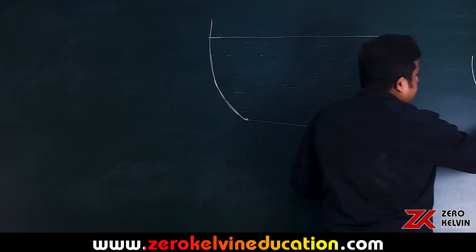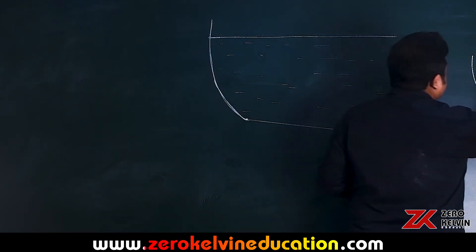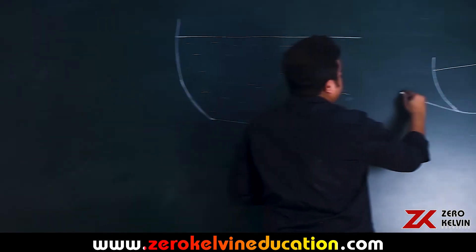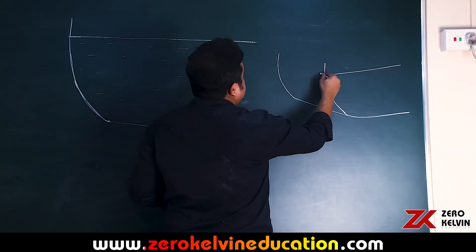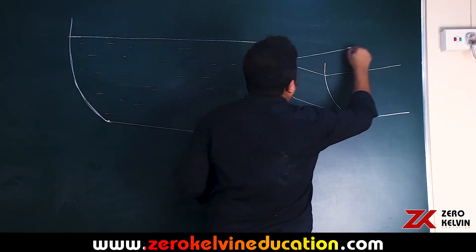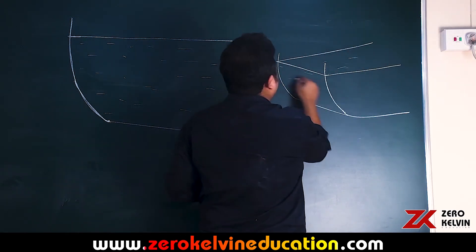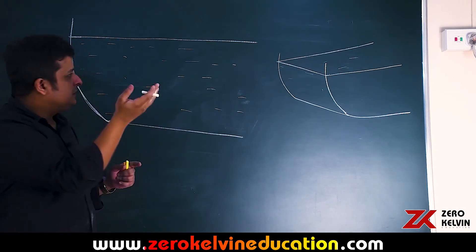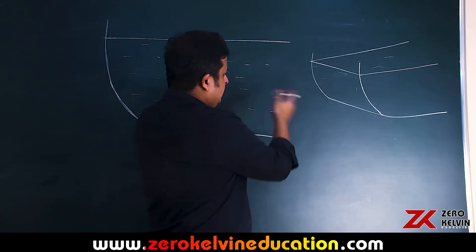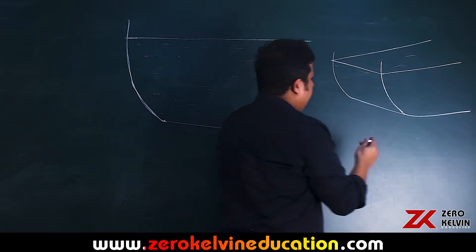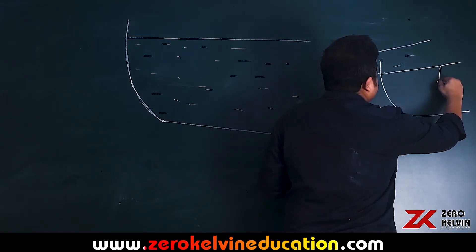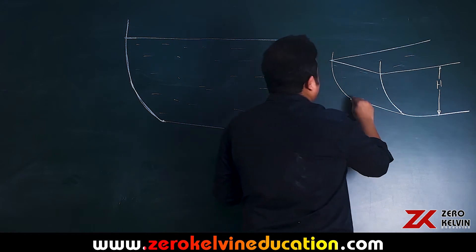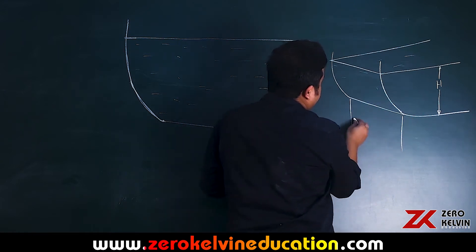You should know the shape of this. A 3D diagram will help. That is the curved area. The width is uniform, the height happens to be H, and the width happens to be D.